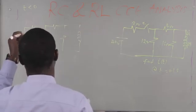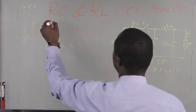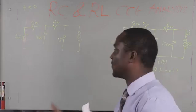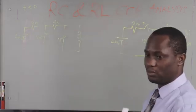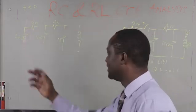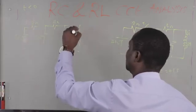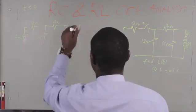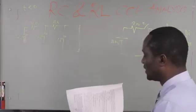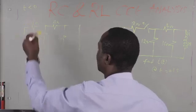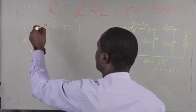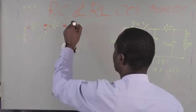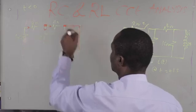So the circuit at t less than 0 has 40 volts, 2 ohms, 4 ohms, 12 ohms, and 16 ohms. For inductive circuits, when a DC source is supplied across an inductor, the inductor becomes a short circuit. This means that when current reaches the node with the inductor, because that branch is shorted, current will not flow through the 16-ohm resistor — all the current will flow through the shorted inductor side.